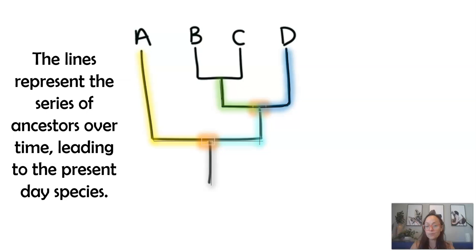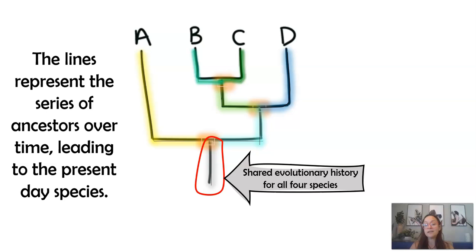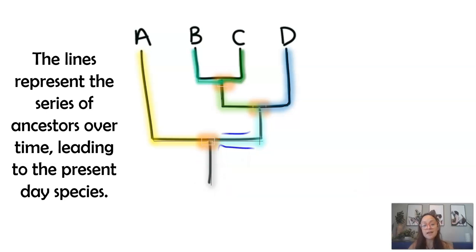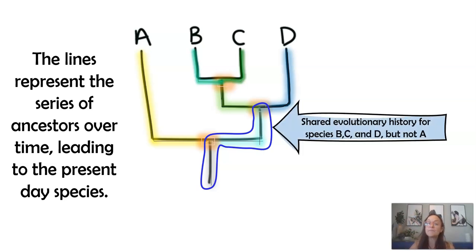Another thing we should point out is that when we look at what these lines represent, this gray line here is the shared evolutionary history of all four species. But then when it branches and it splits between the yellow line and that mint-colored line, this line here is the shared evolutionary history for species B, C, and D. Any traits or mutations that occurred in that blue circled area, you would find in all three species B, C, and D.